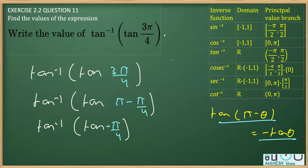Now, as you can see, minus π by 4 lies between minus π by 2 to π by 2. And therefore, you can see that this is equal to minus π by 4, as minus π by 4 lies between minus π by 2 to π by 2.